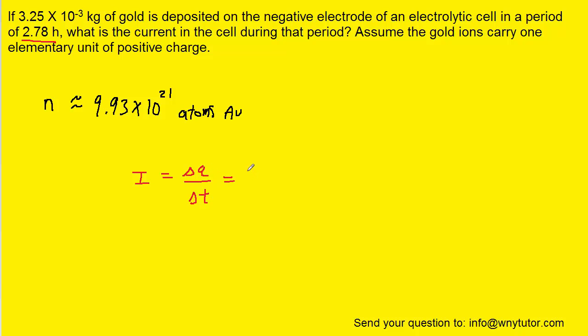And the amount of charge would simply be the number of gold atoms that are flowing through the wire multiplied by the charge on a gold atom. The question tells us that we can assume that the gold ions carry one elementary unit of positive charge. The elementary unit of positive charge is equivalent to e, which we will later see is equivalent to 1.6 times 10 to the negative 19. So again, the total charge is simply the number of gold atoms multiplied by the elementary charge on each one.